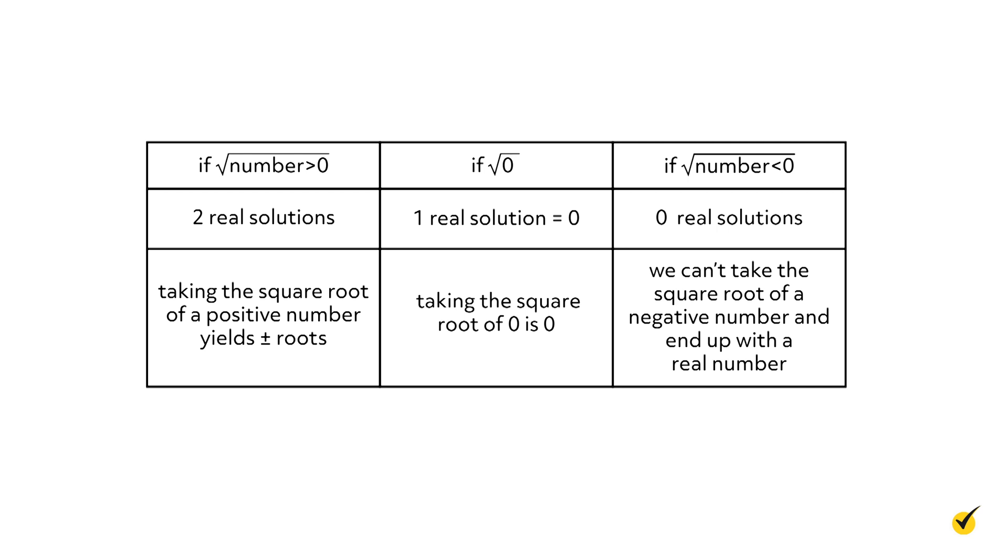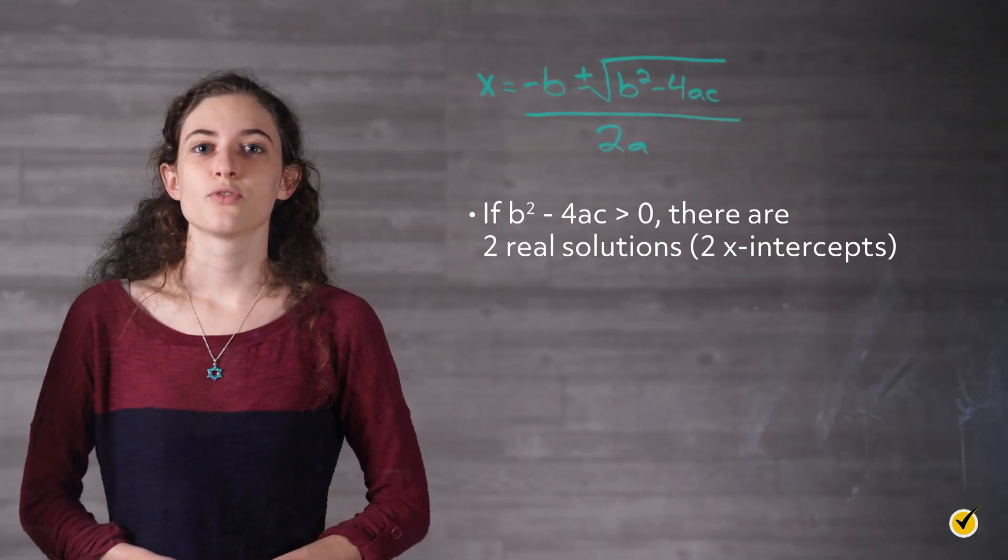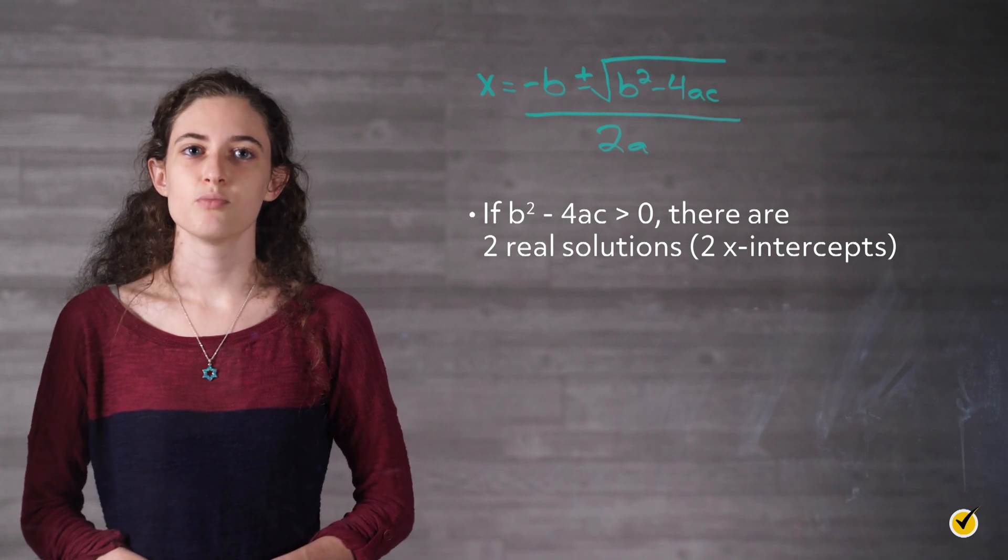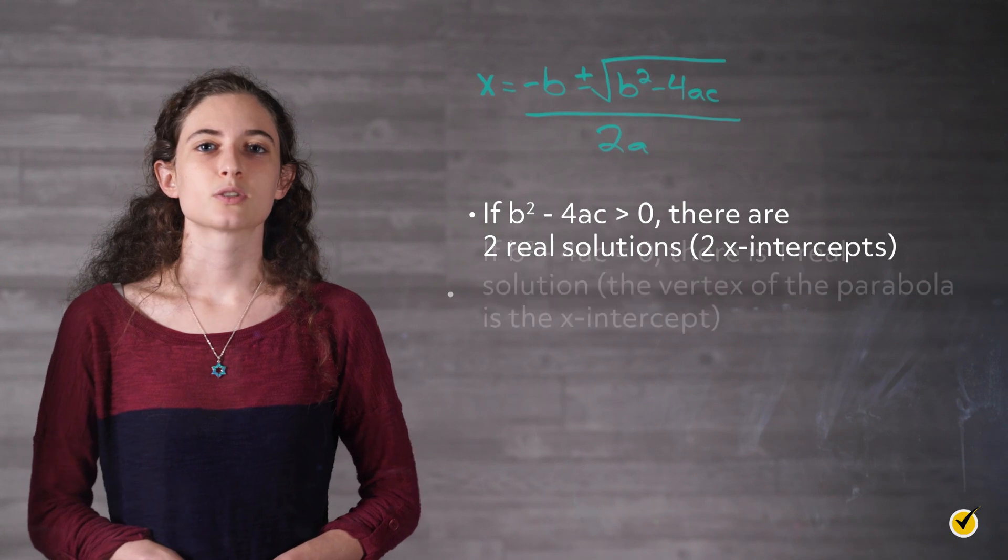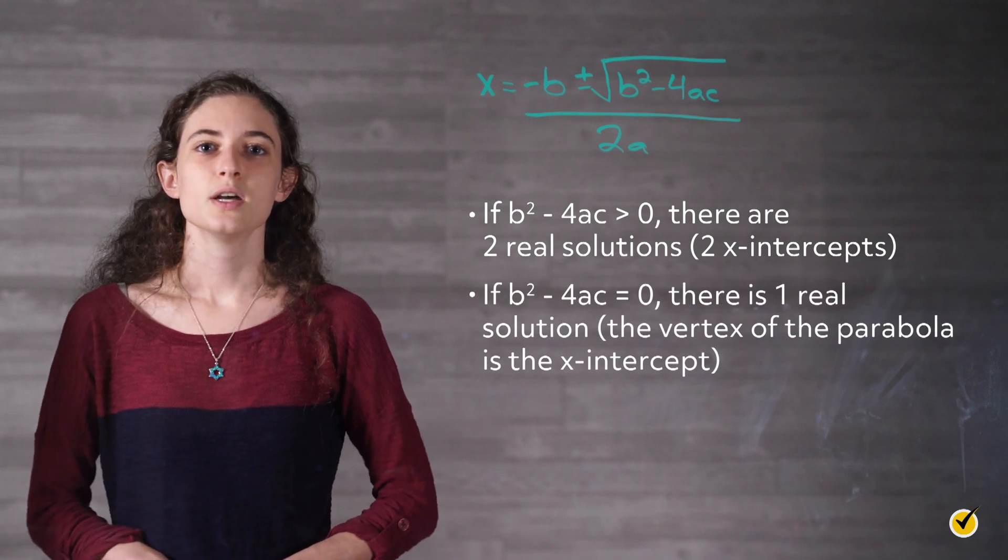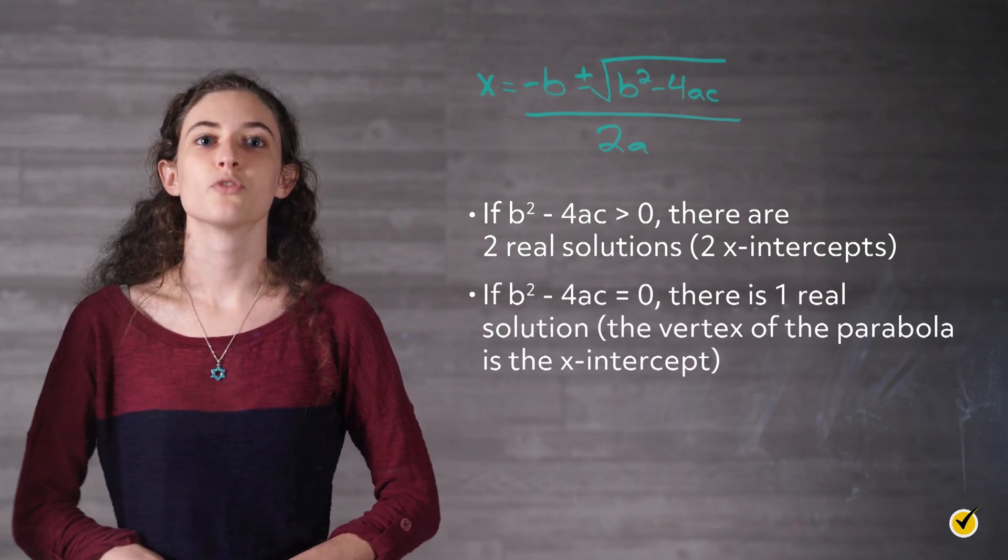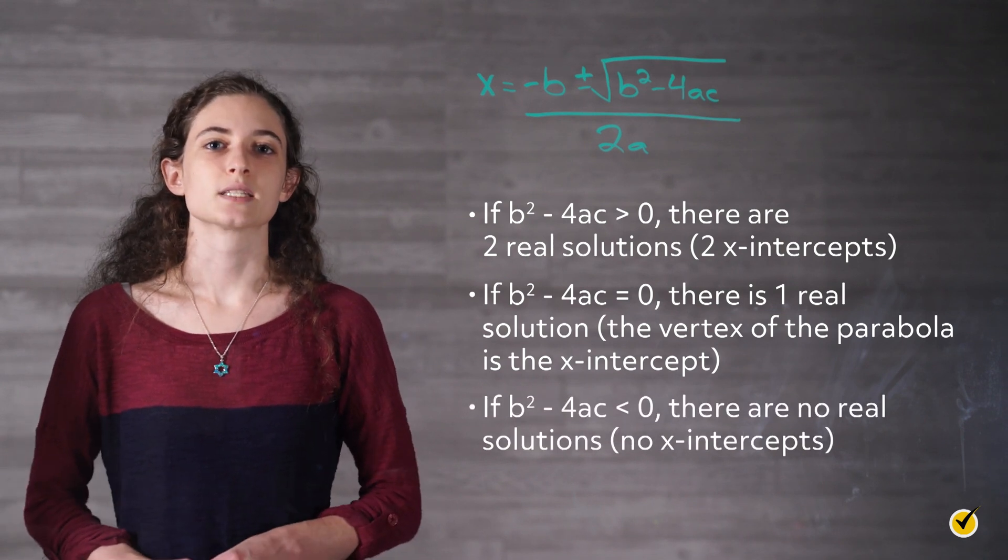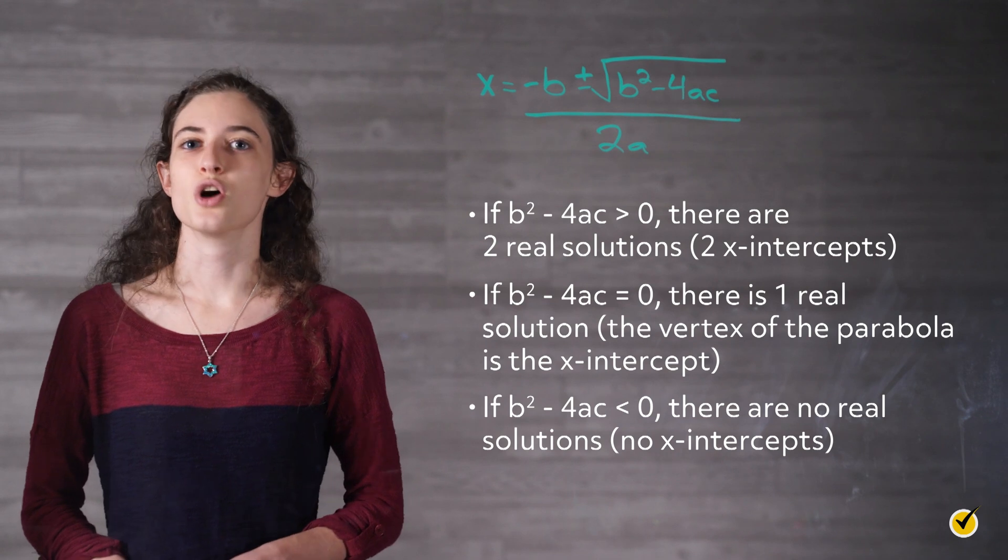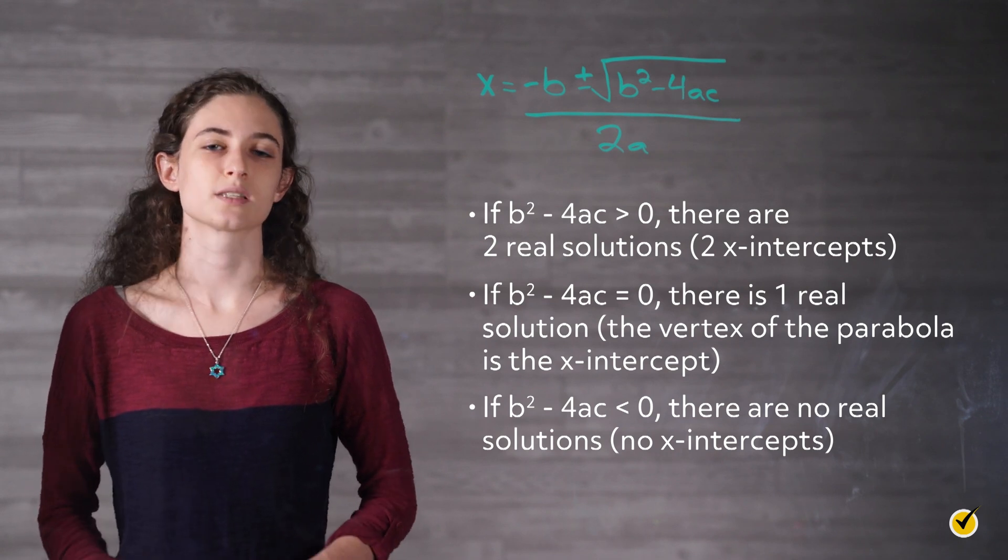So what does this have to do with the discriminant? If b squared minus 4ac is greater than zero, then there are two real solutions, two x-intercepts. If b squared minus 4ac equals zero, there is one real solution. The vertex of the parabola is the x-intercept. And if b squared minus 4ac is less than zero, there are no real solutions, no x-intercepts.